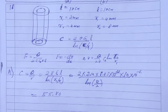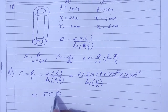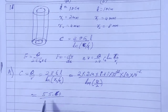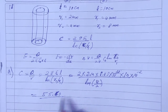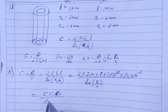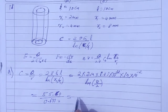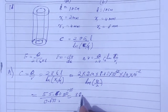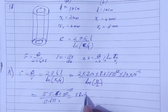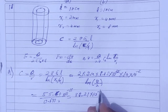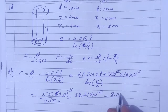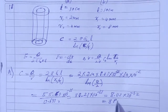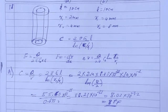Substituting the values, the numerator works out to approximately 55.6 × 10⁻¹³, divided by ln(2). This gives 80.21 × 10⁻¹³, which equals 8.02 × 10⁻¹² farads. So the capacitance for Part A is 8 picofarad.